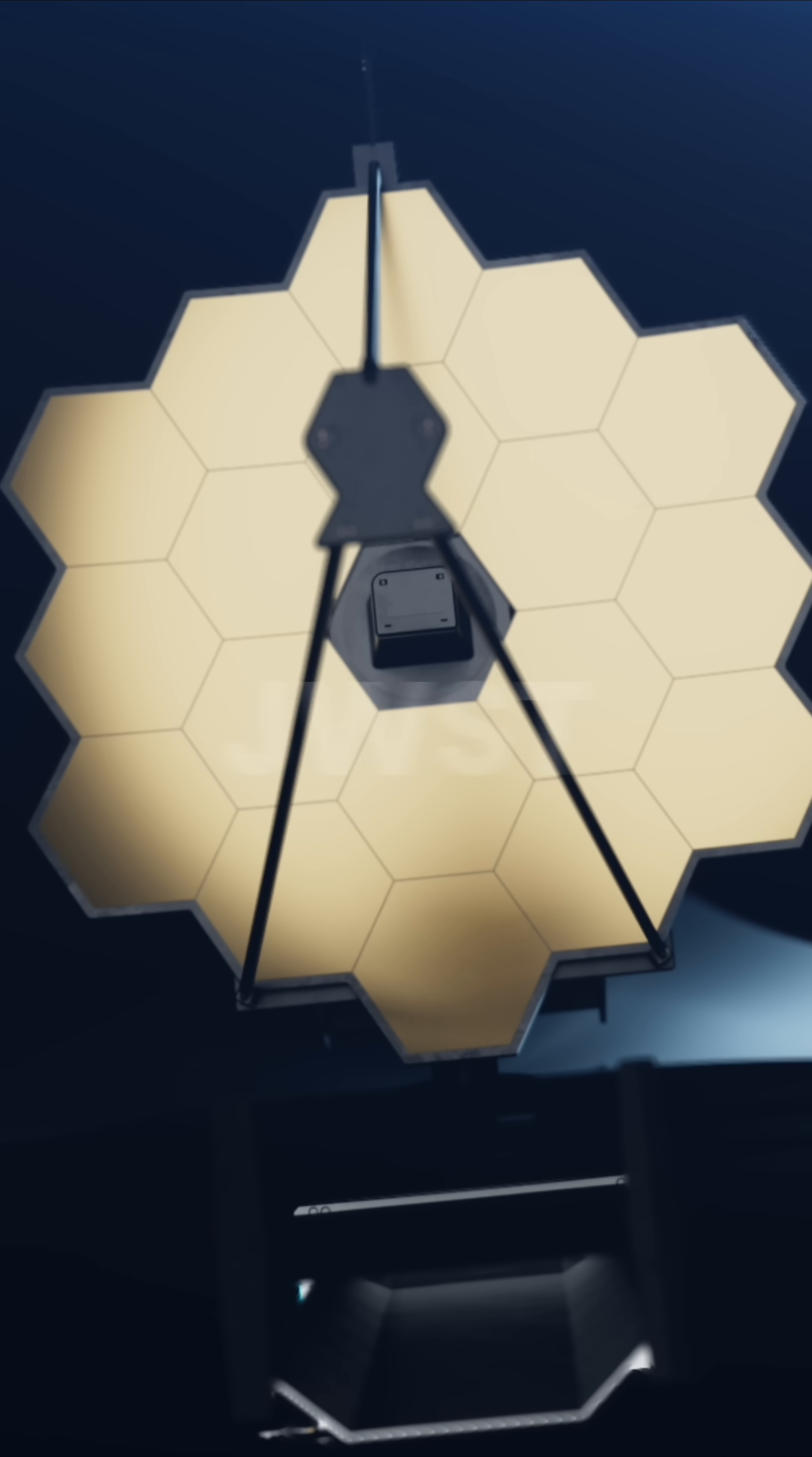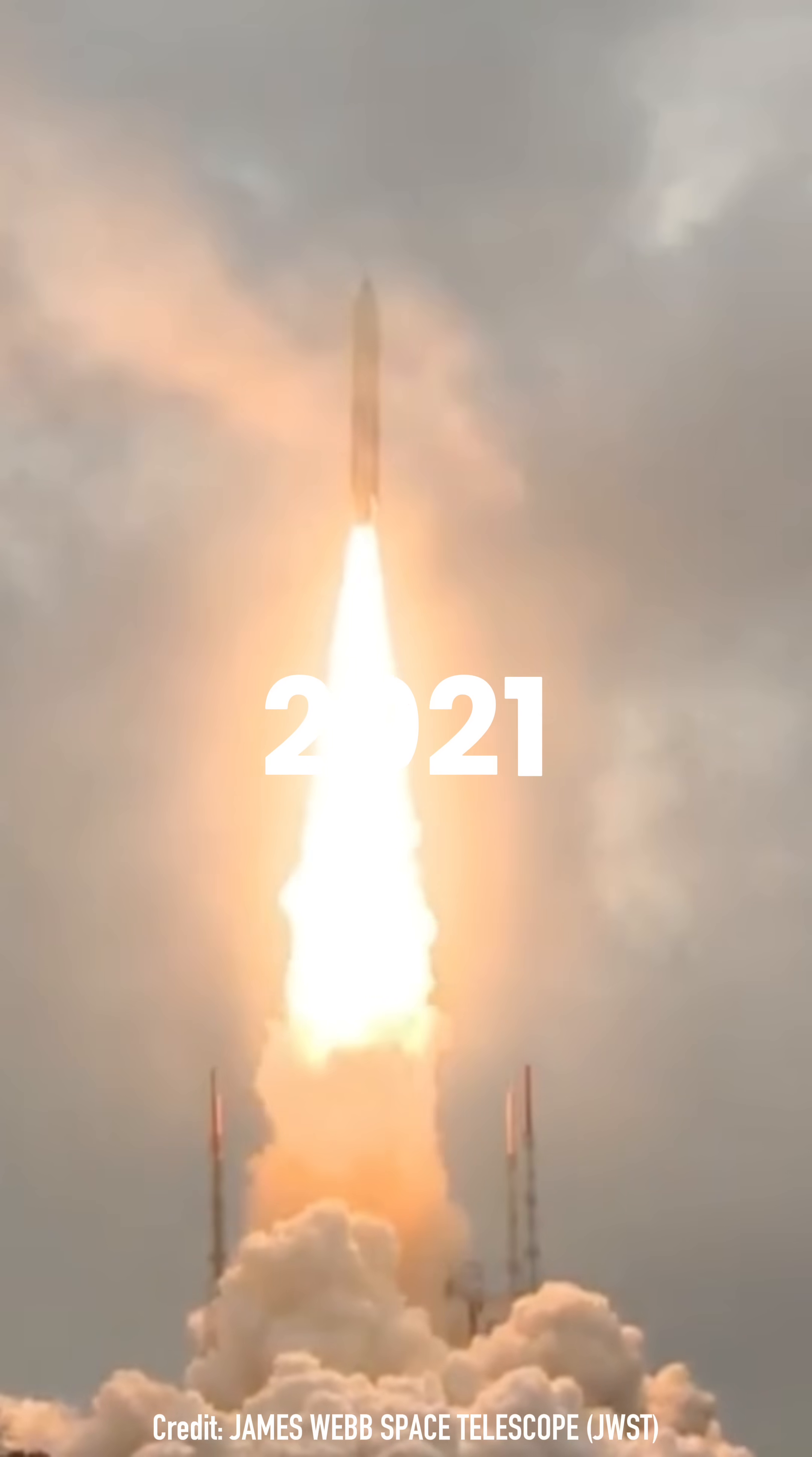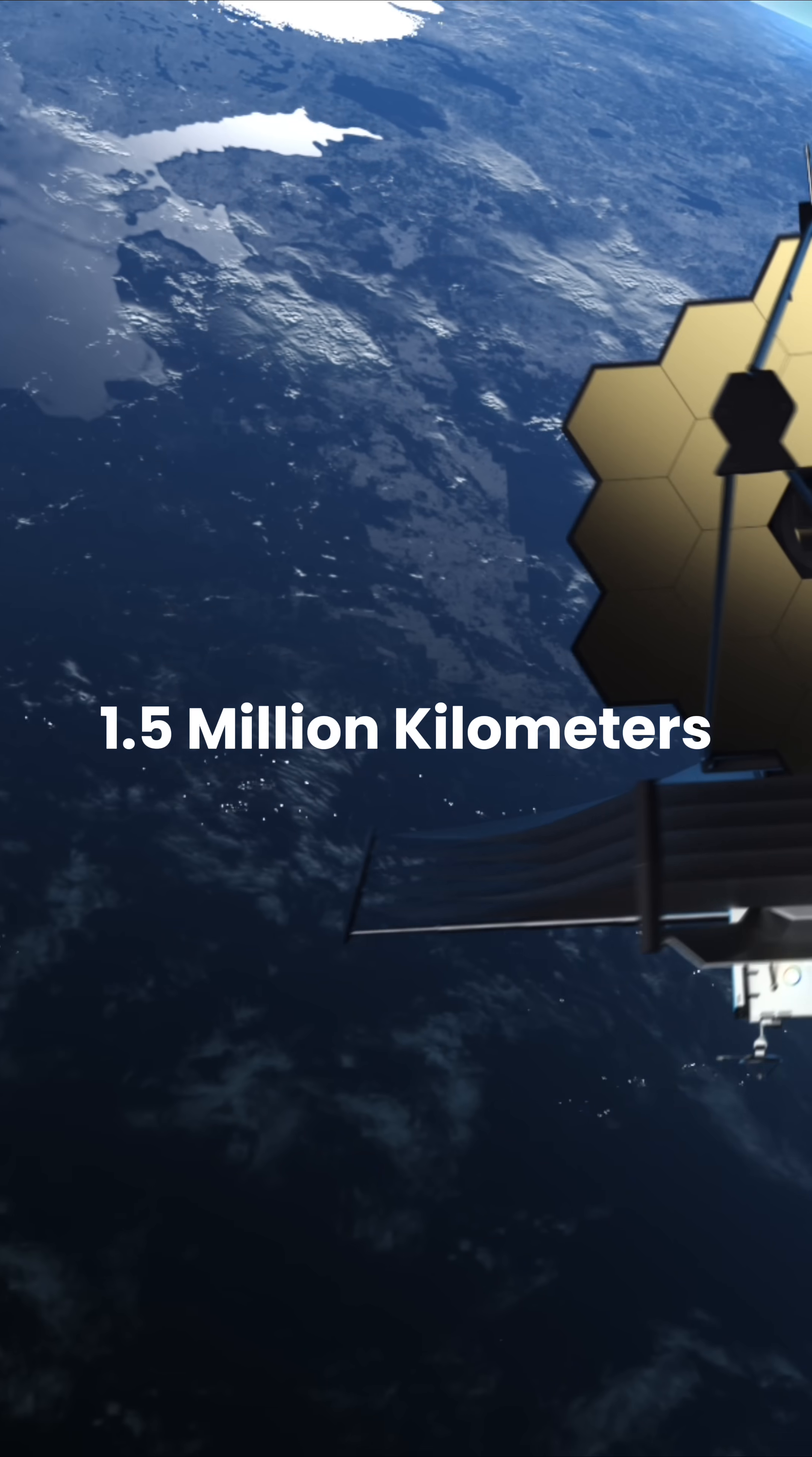The James Webb Space Telescope, or JWST, is the most powerful space telescope ever built. Launched in late 2021, it orbits about 1.5 million kilometers from Earth, far beyond the Moon.